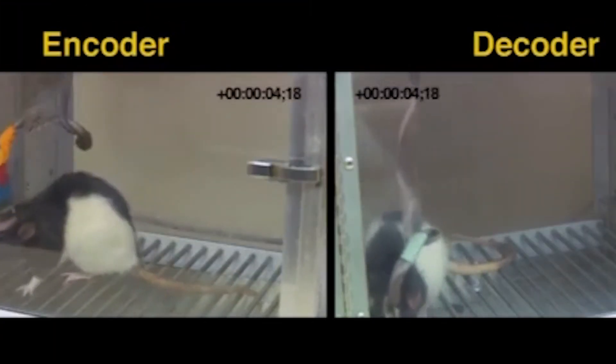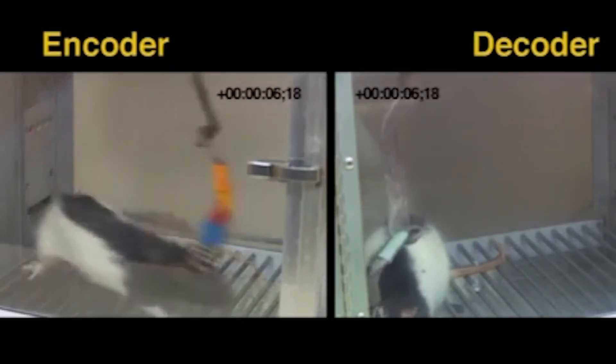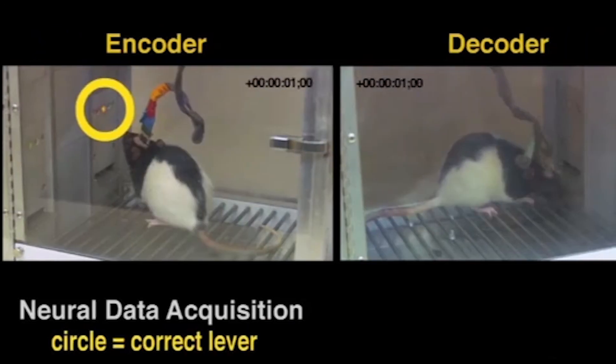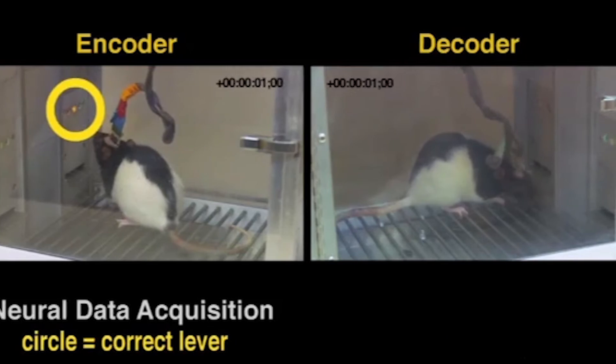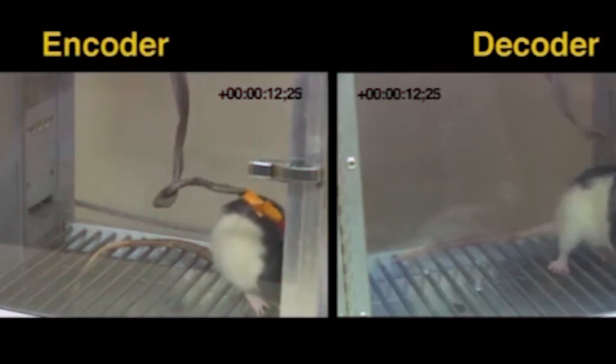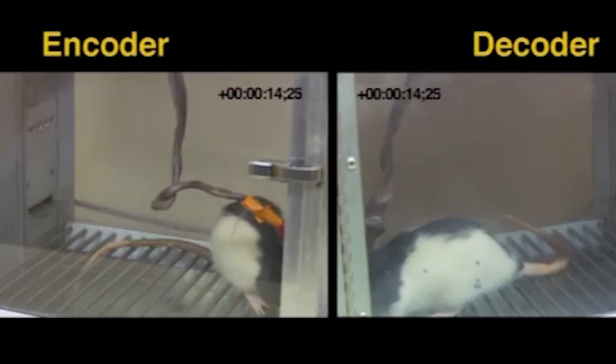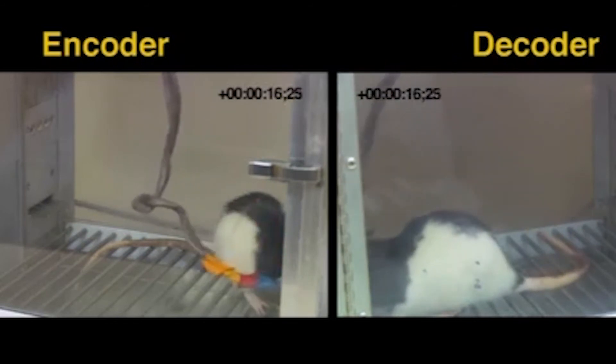The rats were connected via brain implants, and one of them was made to choose one of two levers depending on which colored light bulb was lit. The other rat couldn't see the bulb but pressed the right lever nonetheless, acting on electric impulses from the brain of the other rat.